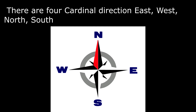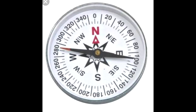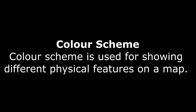The four cardinal directions are east, west, north, and south. And there are four intermediary directions: northwest, northeast, southwest, and southeast. A compass is used to determine the direction at an unknown place.